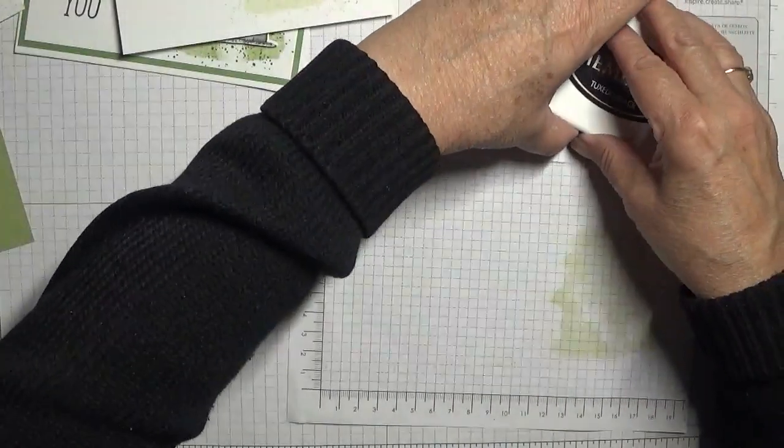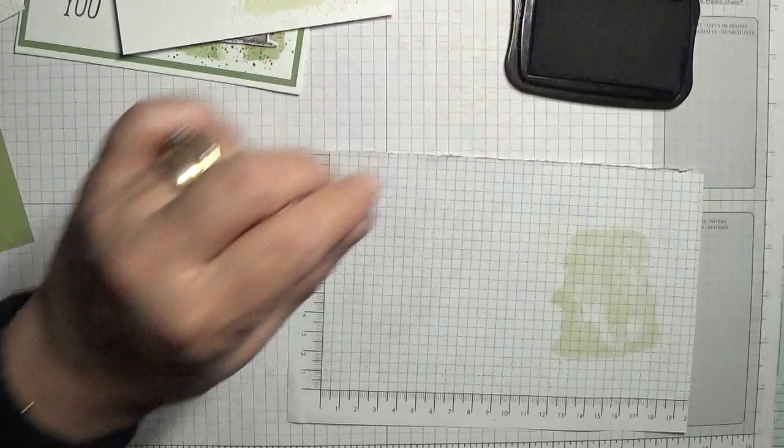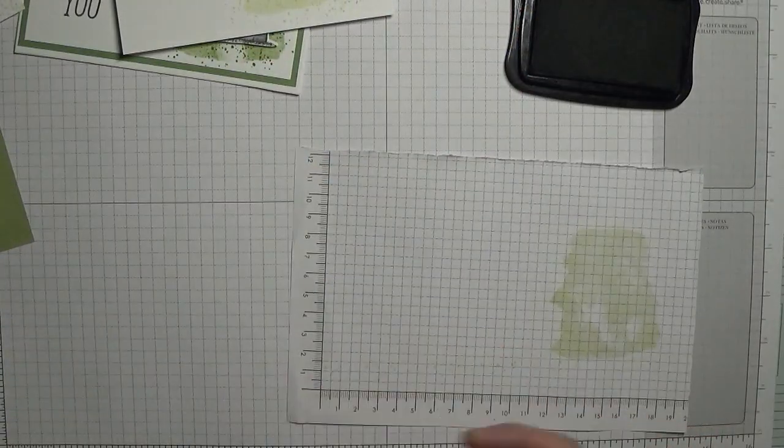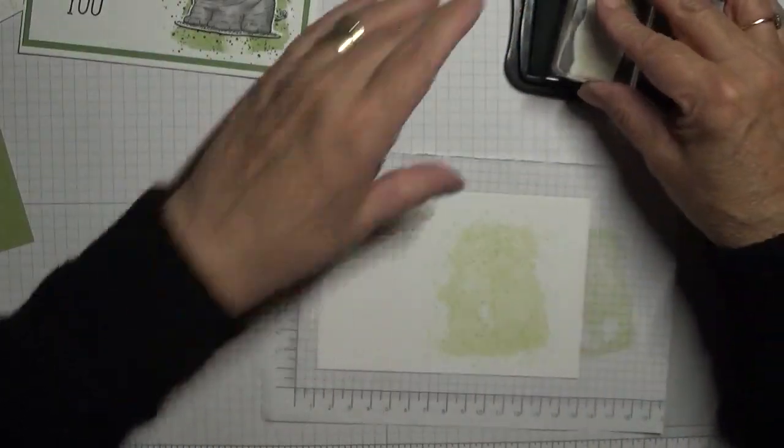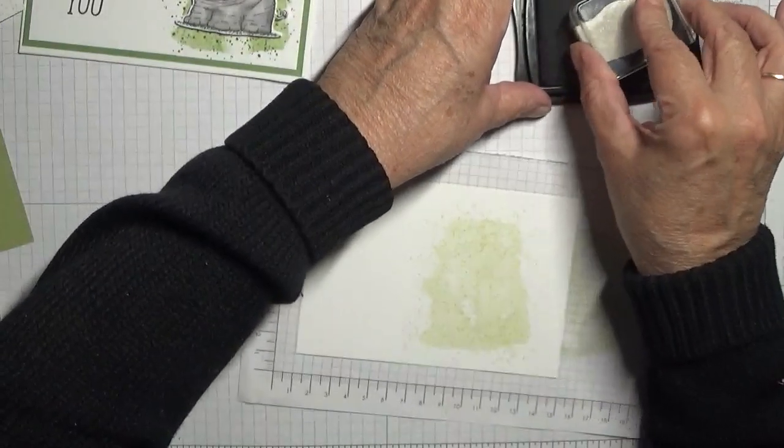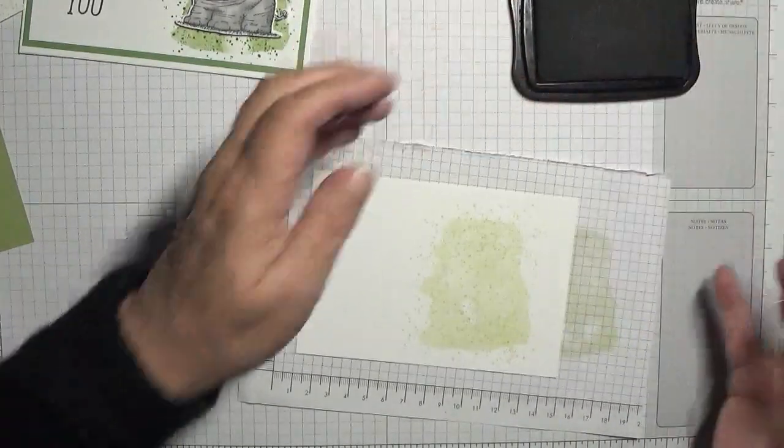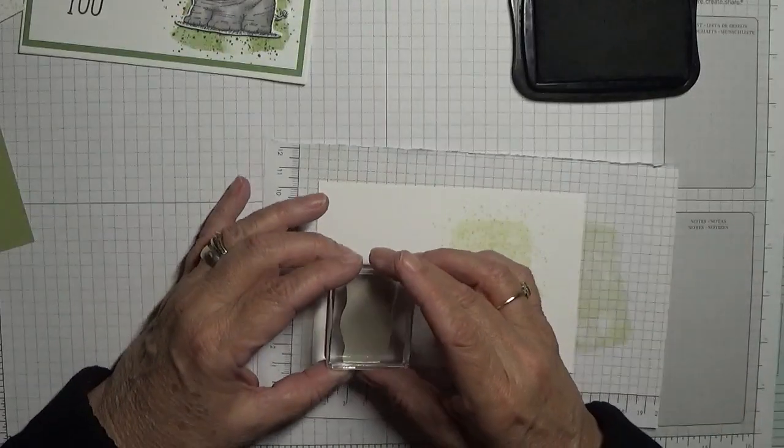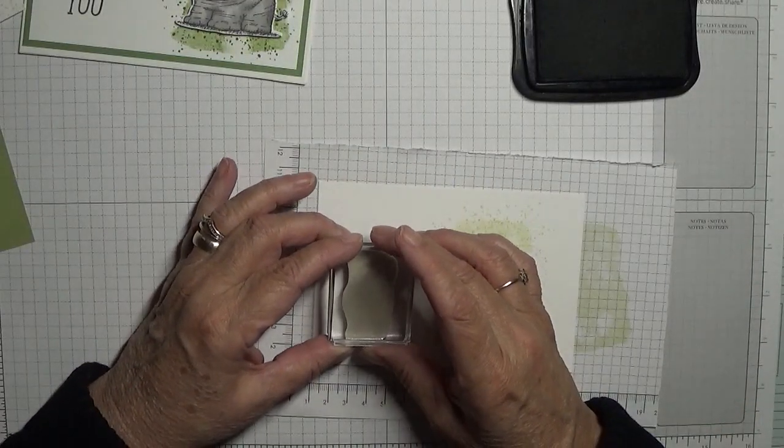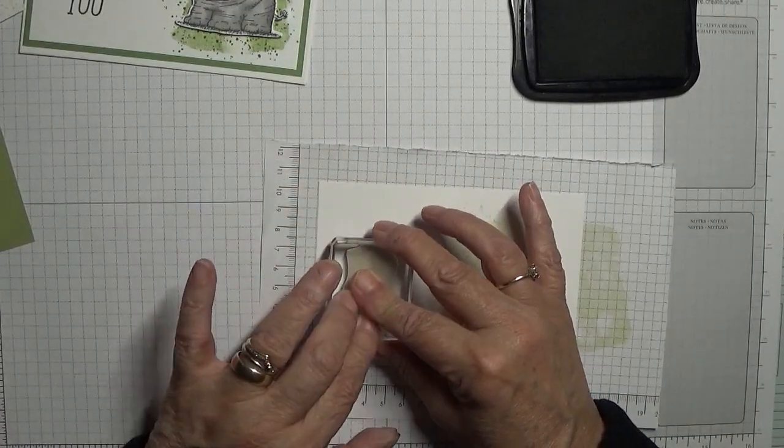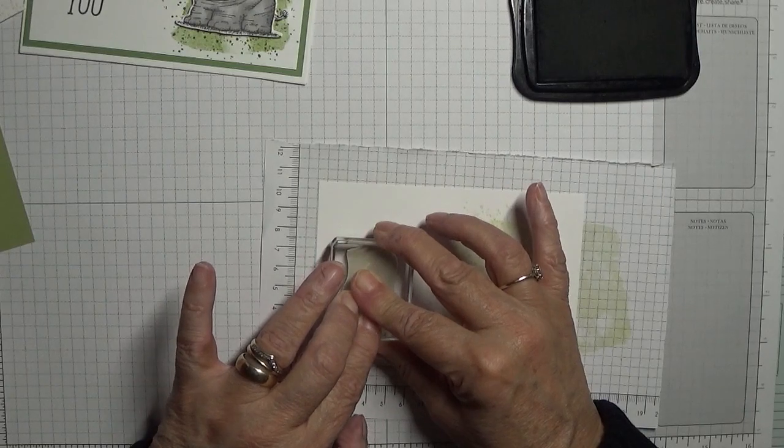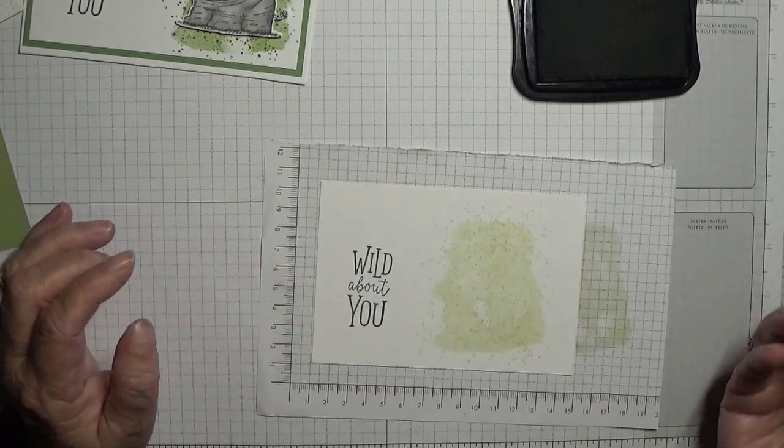While we've got the pebbles out, just going to stamp this along the bottom. That's all I've done. Clean that, put this away again, and bring the Memento ink out and the sentiment. I'm going to stamp this just here and pray that it's straight. Nice.